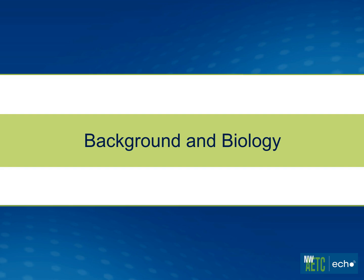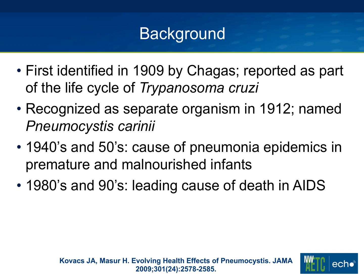Pneumocystis is a fascinating organism. It was first identified in 1909 by Carlos Chagas, who thought it was part of the life cycle of Chagas disease, or American trypanosomiasis. In 1912, it was recognized as a separate organism and first named pneumocystis carinii by Antonio Carini. Following World War II, it was an incredibly rare condition that mostly caused pneumonia in premature and malnourished infants and children receiving chemotherapy. Then in the 80s and 90s, it became a leading cause of death in patients with AIDS.